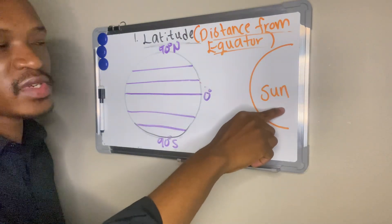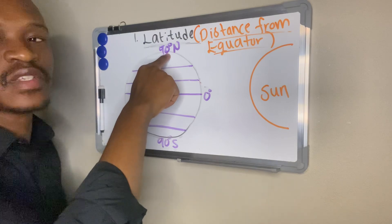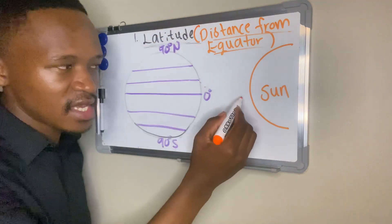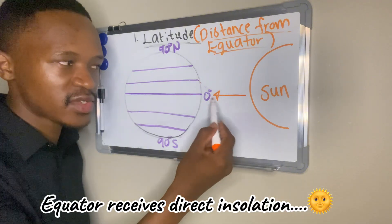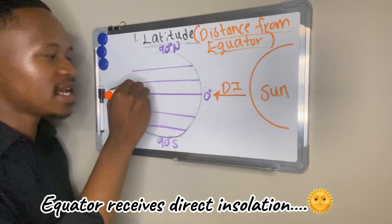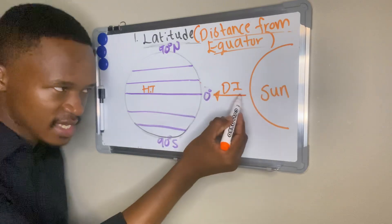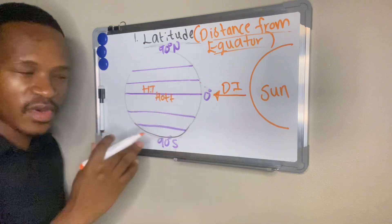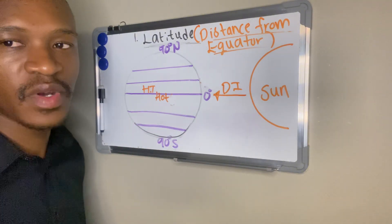On the side, I drew the sun and this is my earth. I have my zero-degree line of latitude, which is the equator. I have 90 degrees north, I have 90 degrees south — these are my poles. The equator receives direct insolation, hence it has high temperatures. It is hot at the equator because it receives direct insolation or radiation from the sun.